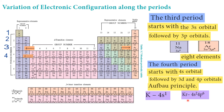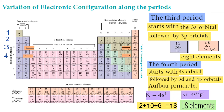The total number of elements in the fourth period is: s2 + d10 + p6, giving 2 + 10 + 6 = 18 elements. This is the fourth period.